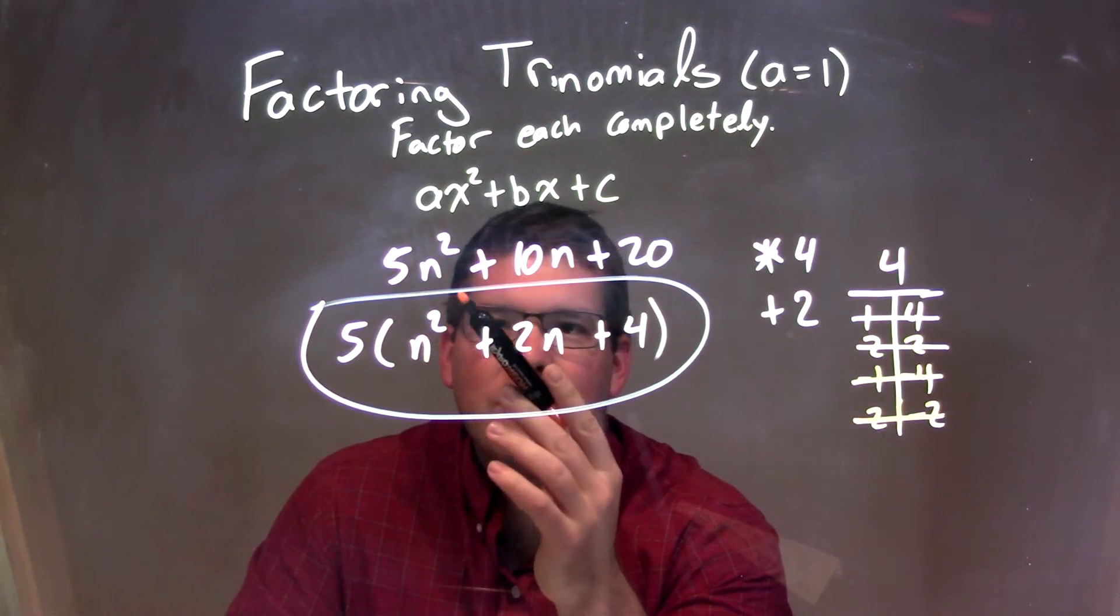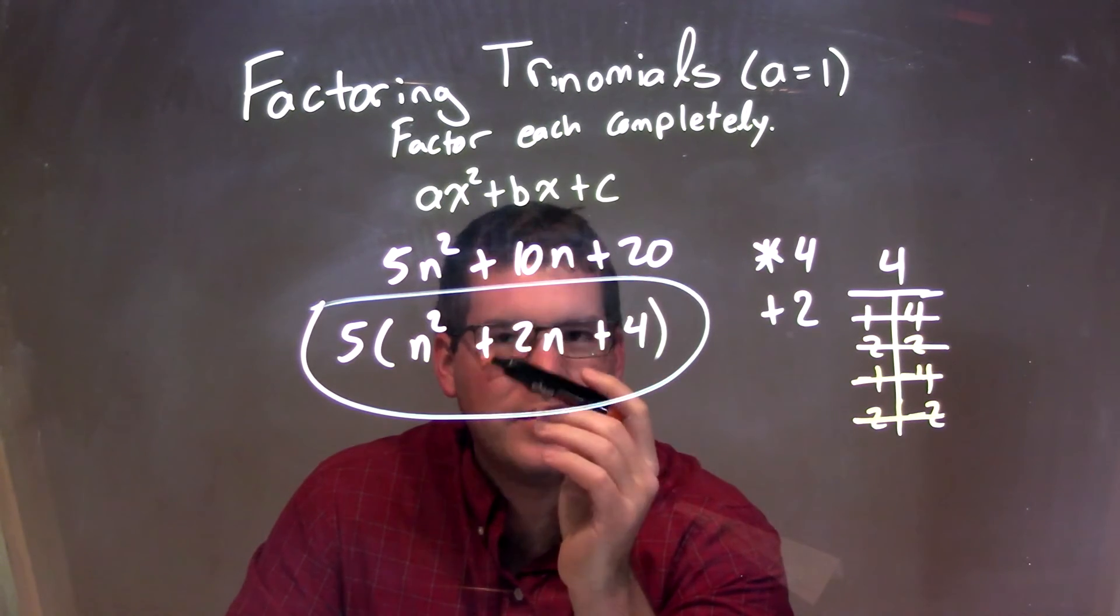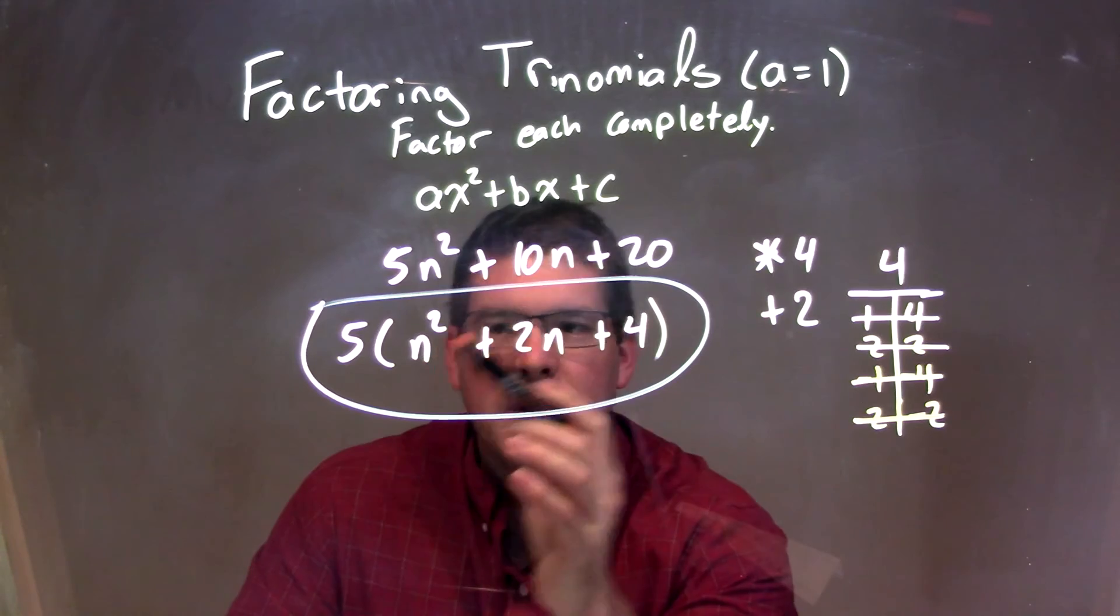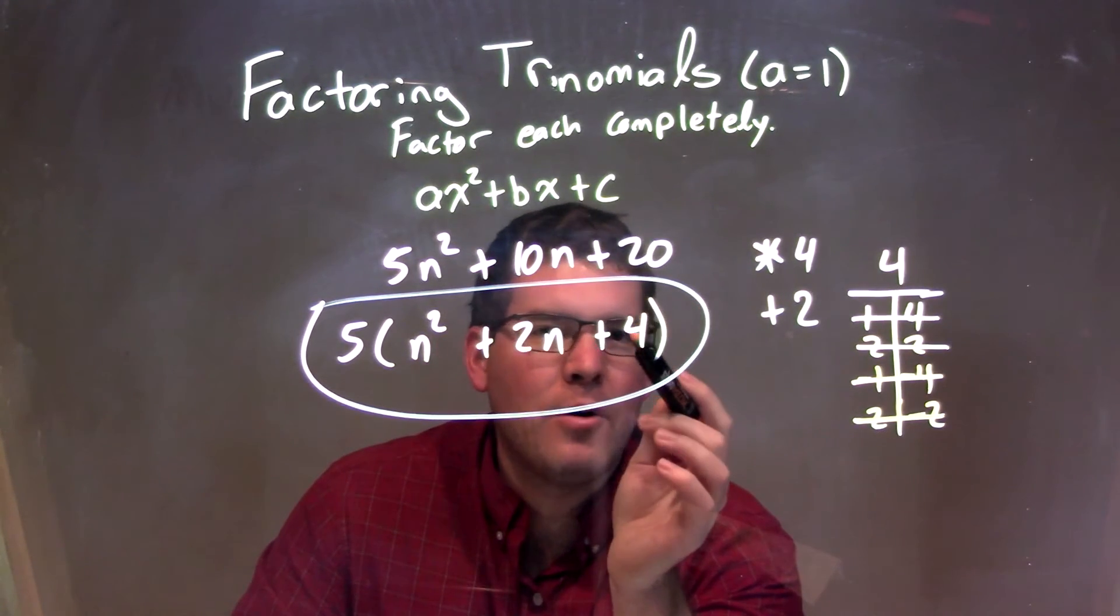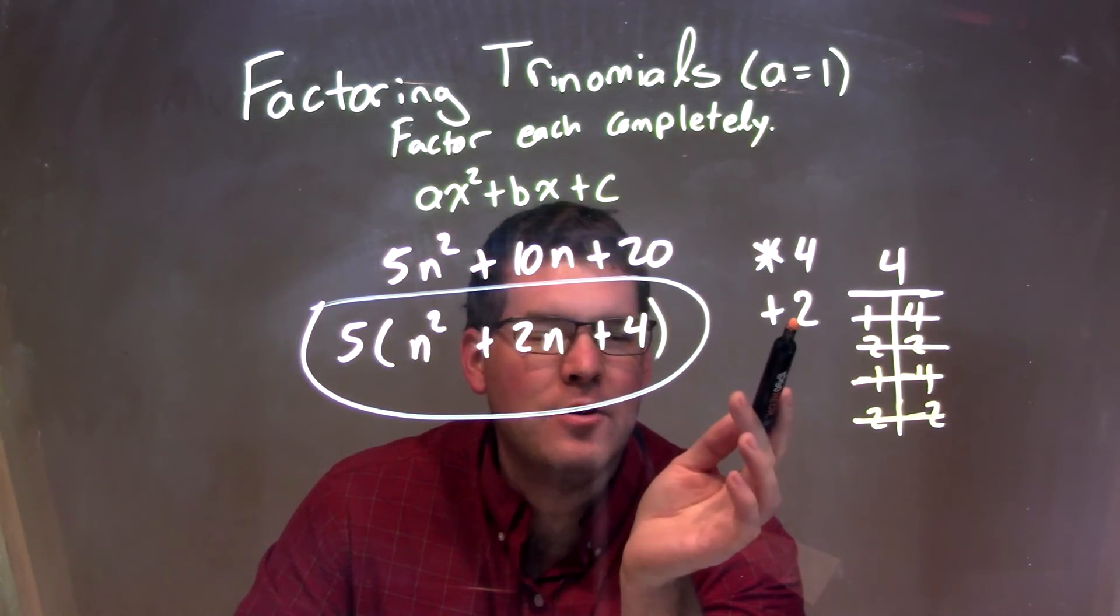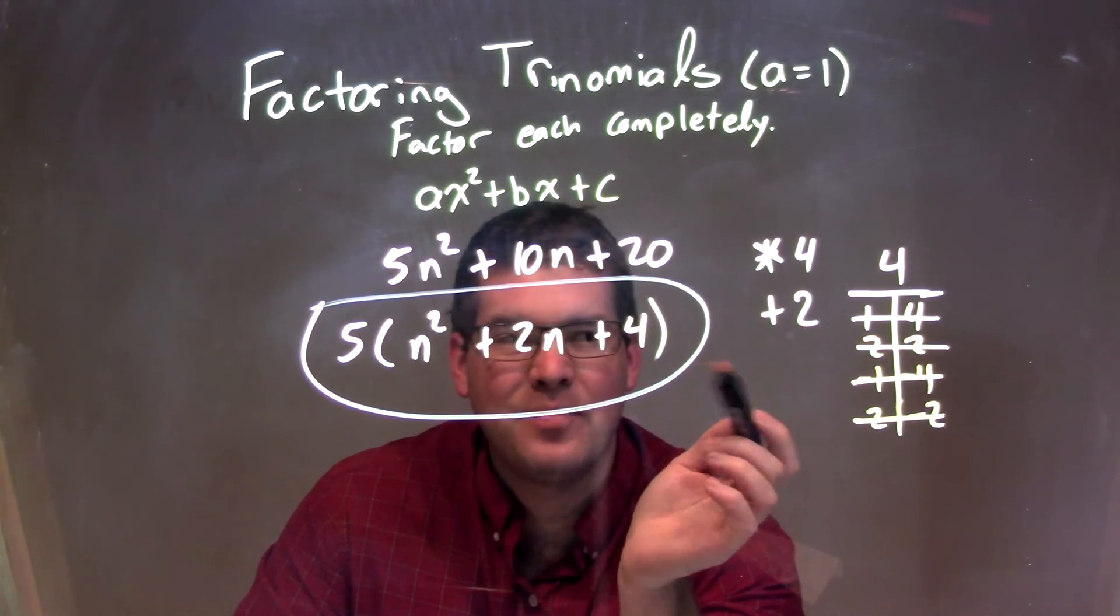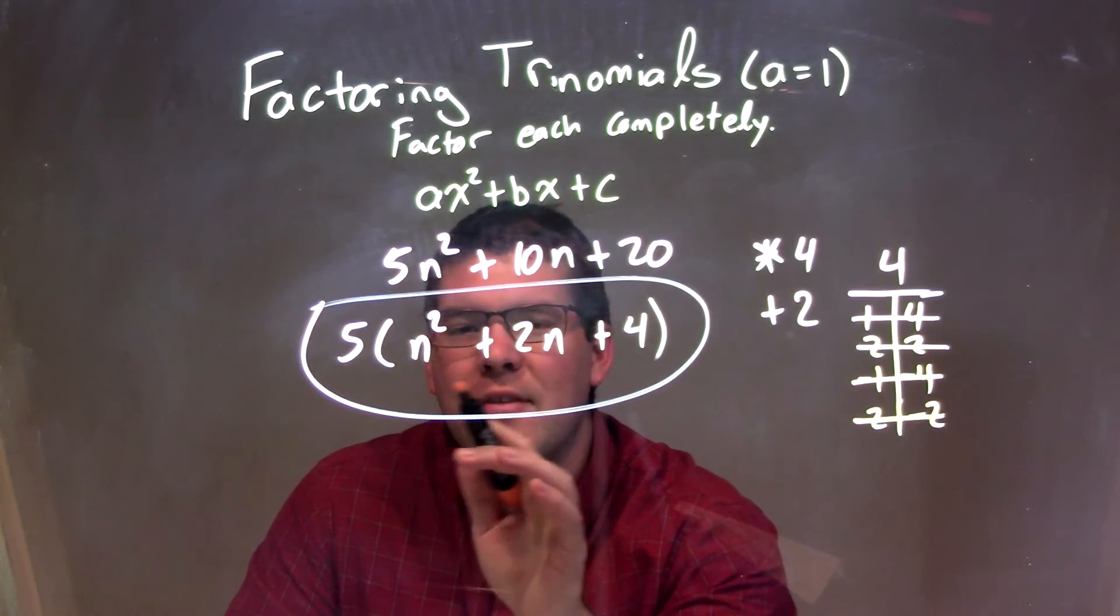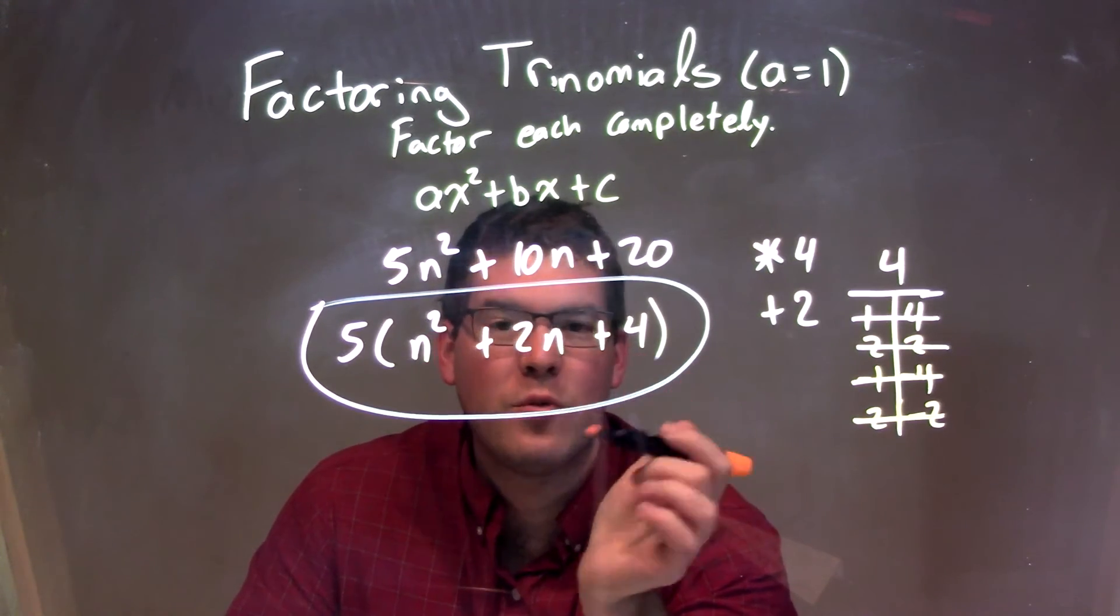So to recap, we had 5n² + 10n + 20. And we had to factor that. Well, we saw 5 went into all parts. We pulled that out. After that, though, we asked which numbers multiplied to be 4 and added to be 2. We asked that question, and nothing came up. We're just left with this as our final answer: 5 times (n² + 2n + 4).